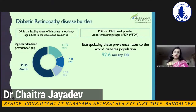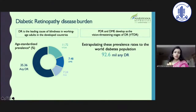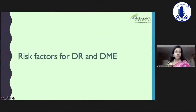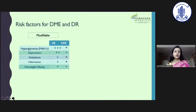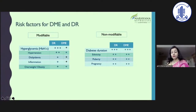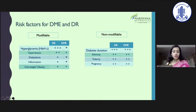When you extrapolate prevalence rates to the world diabetes population, there are at least 17.2 million patients with PDR, and over one quarter of them have vision-threatening diabetic retinopathy. As for risk factors, there are some modifiable and non-modifiable. Important modifiable risk factors are systemic control, HbA1C, hypertension, weight, and dyslipidemia, whereas a non-modifiable — and unfortunately so for young patients who develop diabetes — is diabetes duration.